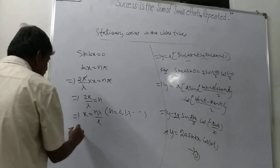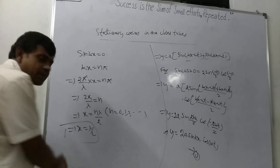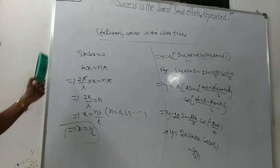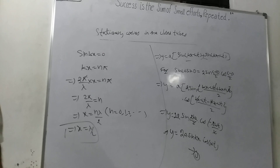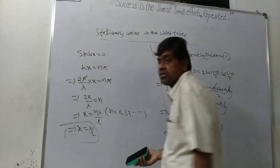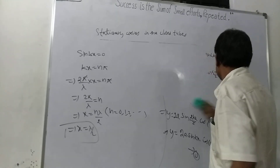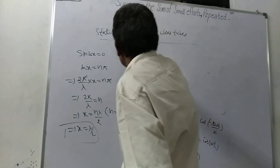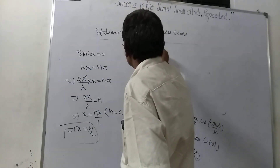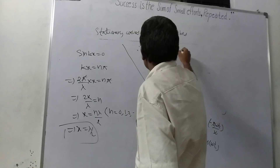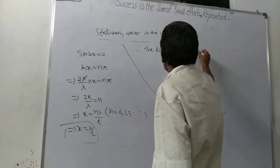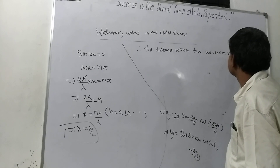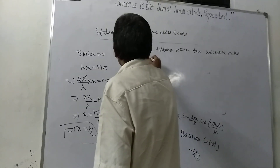Substituting n equals 0, x equals 0; n equals 1, x equals lambda by 2. Therefore, the distance between two successive nodes is lambda by 2.